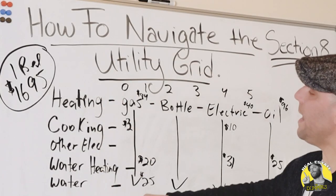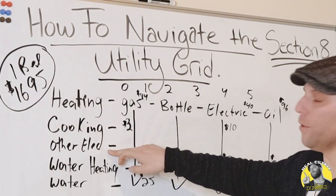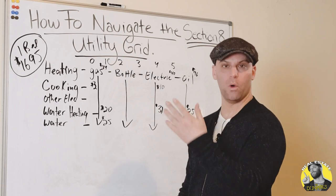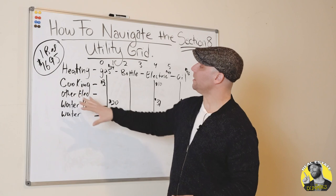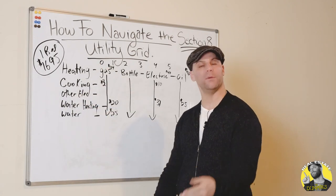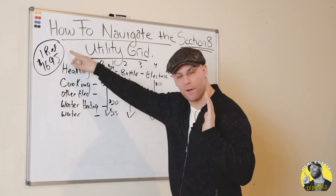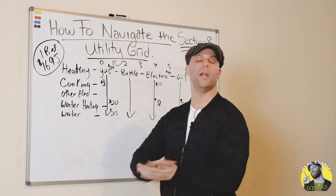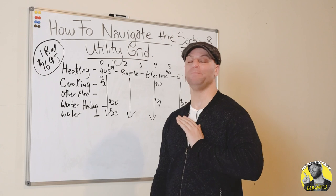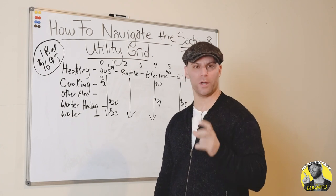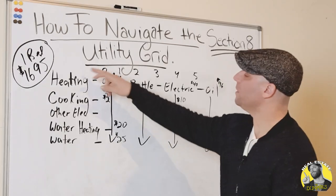The way they lay it out is they have heating, cooking, other electric — which is basically lights in the hallways, lights in the bathrooms — where the hot water heat comes from, and then water. Obviously if you as the landlord are paying all these things in a multi-family building, you're going to get the $1,695 all directly to you and you pay the utilities — really a bad idea. Try to sub-meter as soon as you possibly can; it will pay dividends.